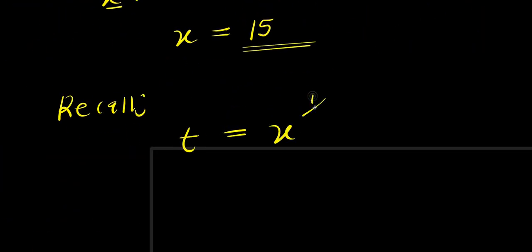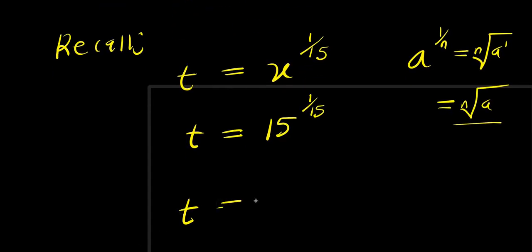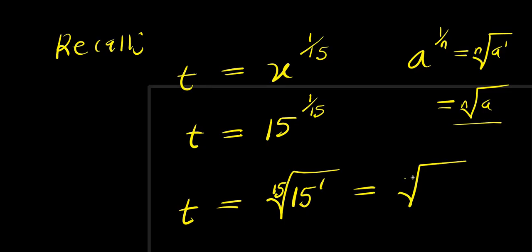T equals x^(1/15). That means T equals — what is our x? x is 15 — so T equals 15^(1/15). Now if you have a^(1/n), this is just like writing the nth root of a^1, which is the same as writing the nth root of a. So from here we have T equals the 15th root of 15 to the power of 1, which is the 15th root of 15. So that is our T.